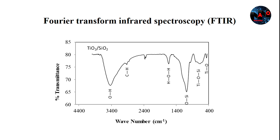The peaks around 3,400 and 1,600 per centimeter are assigned to the hydroxyl group and hydrogen-oxygen-hydrogen bonds respectively. Peaks between 2,840 and 3,000 per centimeter are due to carbon-hydrogen stretching vibration of alkane groups.